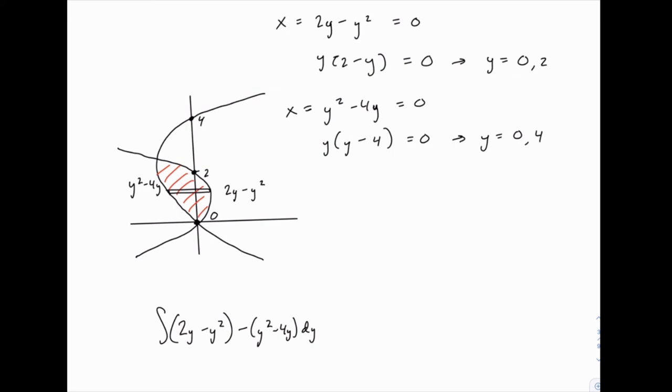Now it should be clear that one place where they intersect is down here at y equals 0. The only other thing we need is the y value of this intersection point. So we need to find where they intersect on the upper side. To do that, we're going to do just like we did with functions earlier. We set them equal to each other. So we'll say y squared minus 4y equals 2y minus y squared. And then, just like any quadratic equation, we solve this by moving everything to one side.